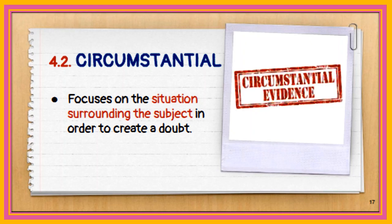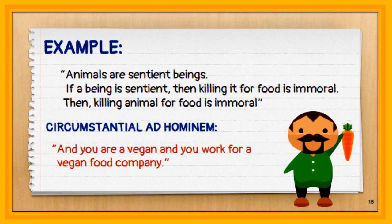The second subtype of ad hominem is the circumstantial, which focuses on the situation surrounding the subject in order to create doubt. For example, one claims that animals are sentient beings and killing a sentient being for food is immoral. A circumstantial ad hominem attack would say: 'You are a vegan and you work for a vegan food company — that is why.'